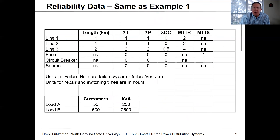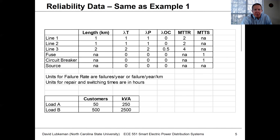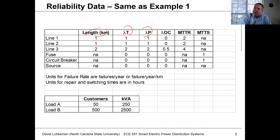The reliability data for this first example will be the same as in the part one presentation. For each segment, I've got a length, a temporary failure rate, and a permanent failure rate. In a more realistic dataset, you would expect two to three times more temporary faults than permanent faults, but it depends on the situation.